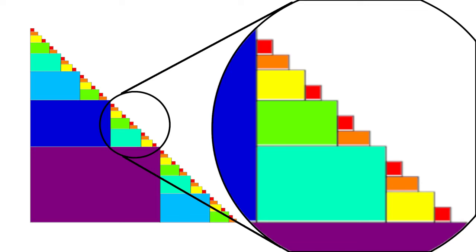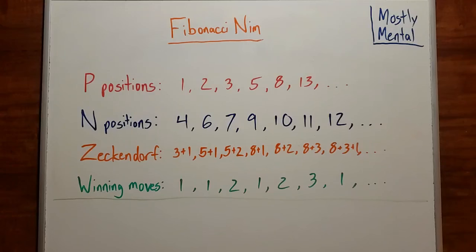I suspect this fractal has been studied before, but I haven't been able to track it down. If anyone knows more about it, let me know in the comments. Okay, the Zeckendorf representation is pretty cool, but how does it help us win our game?